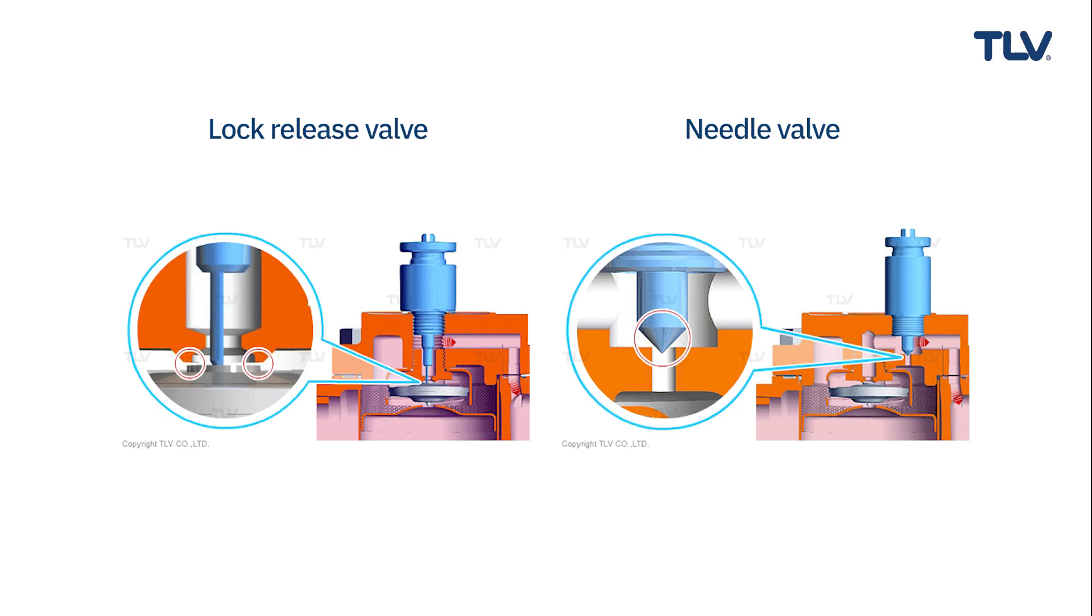Another countermeasure is the use of a lock release valve or needle valve to allow steam to be released to the downstream side of the trap, fixing the steam locking problem. Since lock release valves and needle valves can control the release of steam, steam loss is minimized.